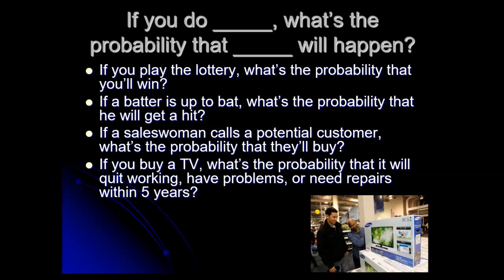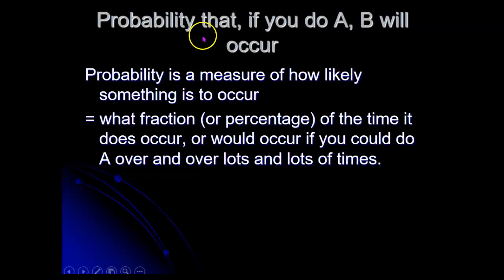The bigger that number is, the more likely the thing is to happen. So when we talk about, what's the probability that if you do A, B will occur? The answer to a question like that is a number that represents how likely that is to occur. The bigger the number, the more likely it is to occur.